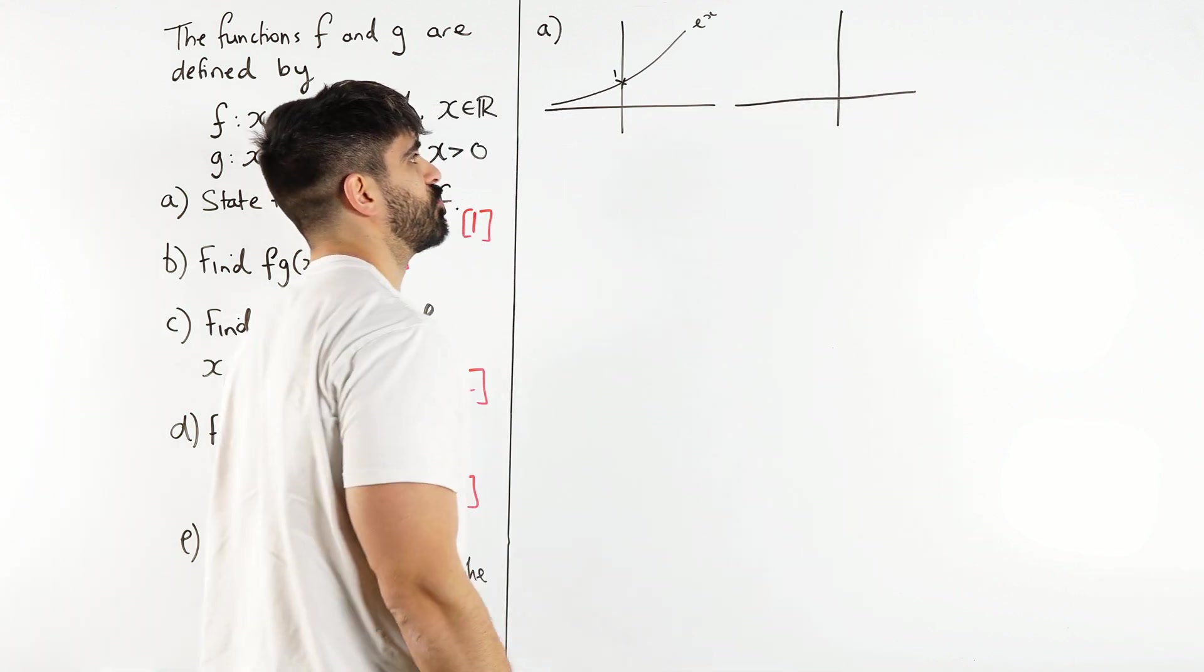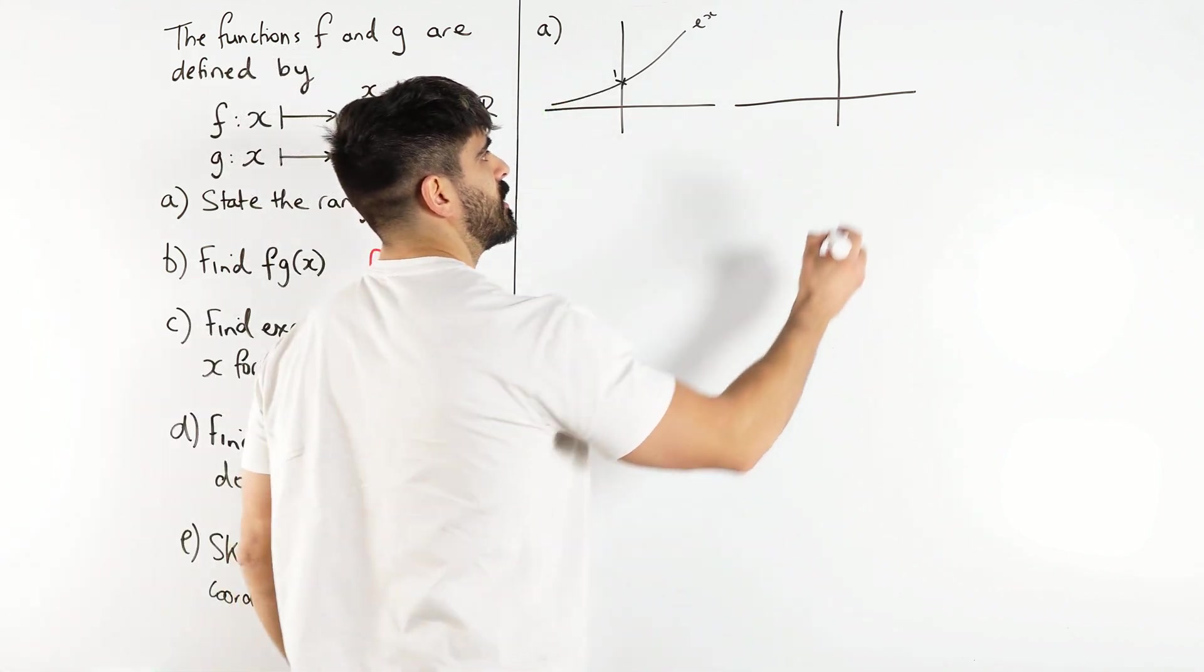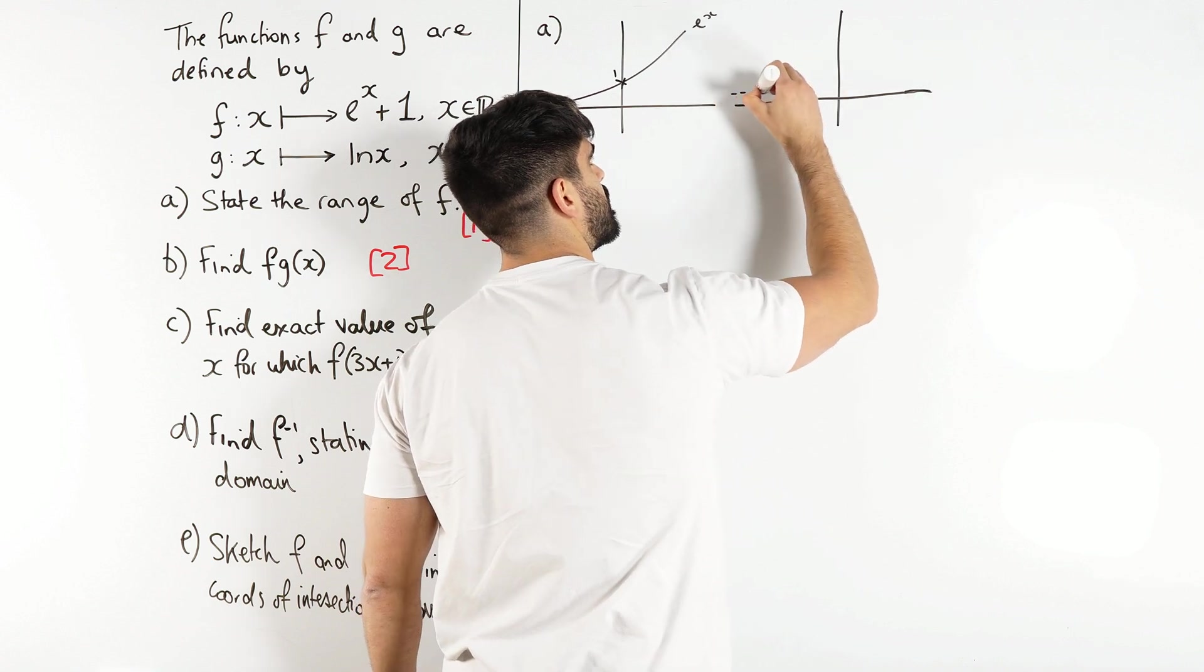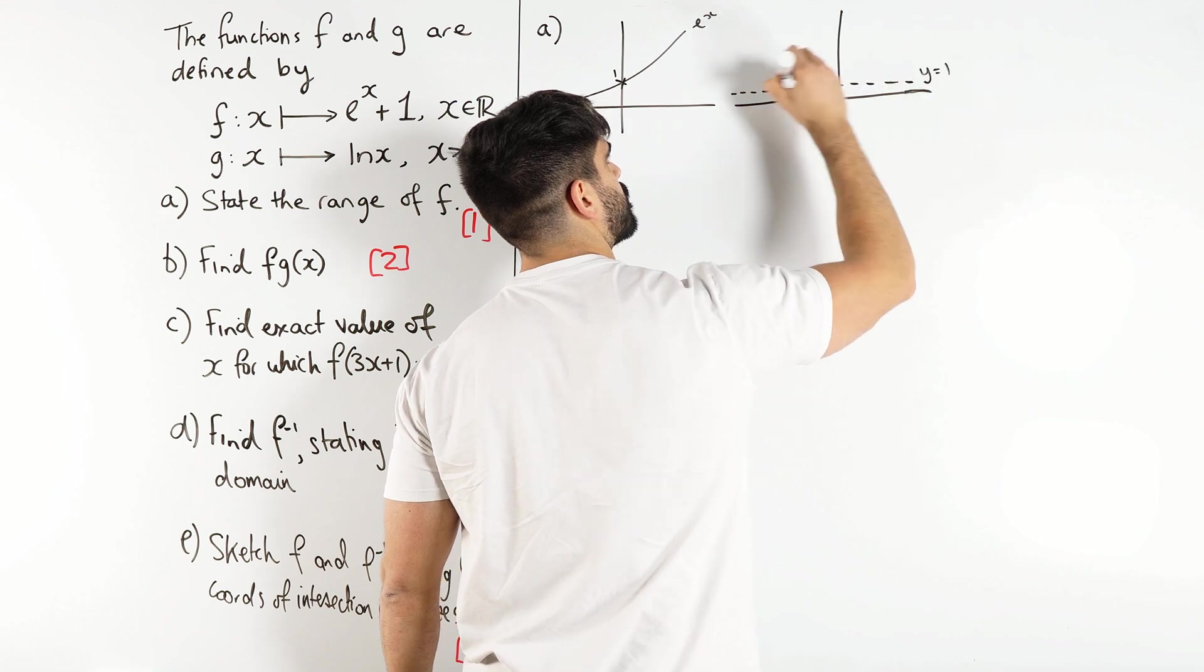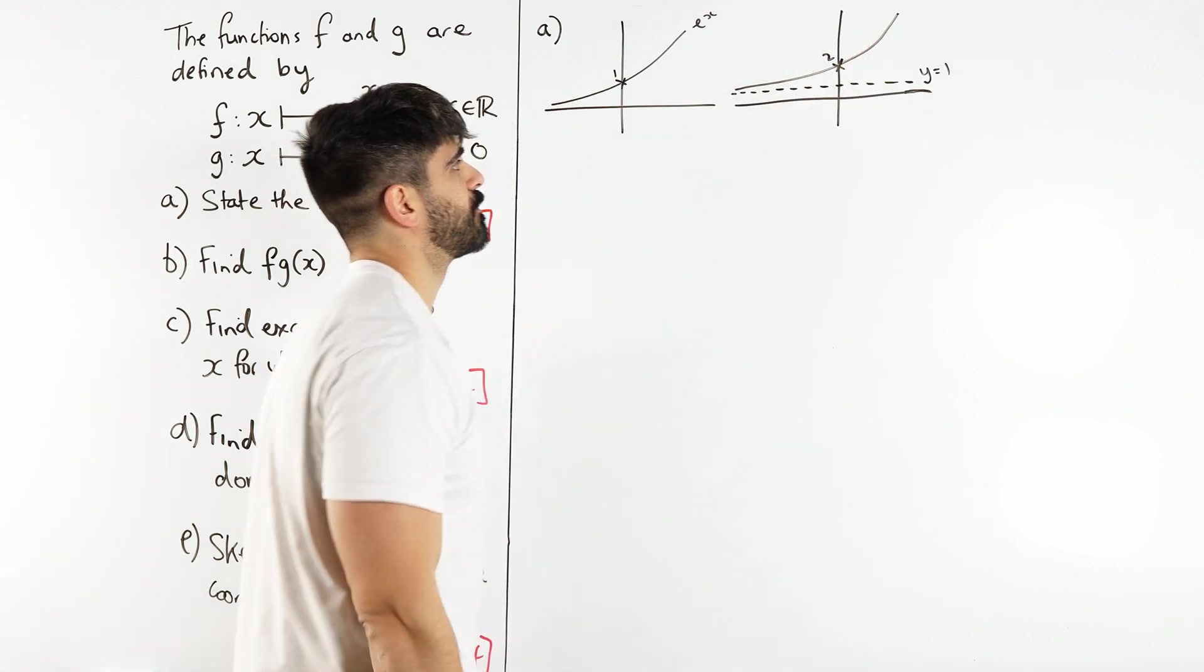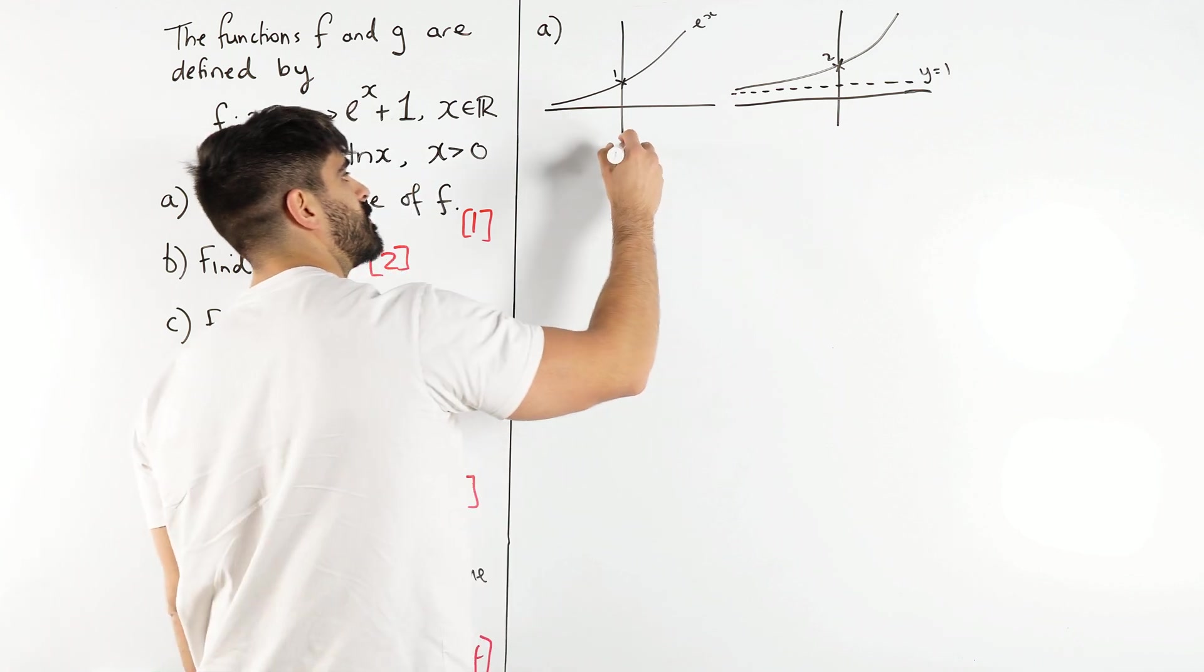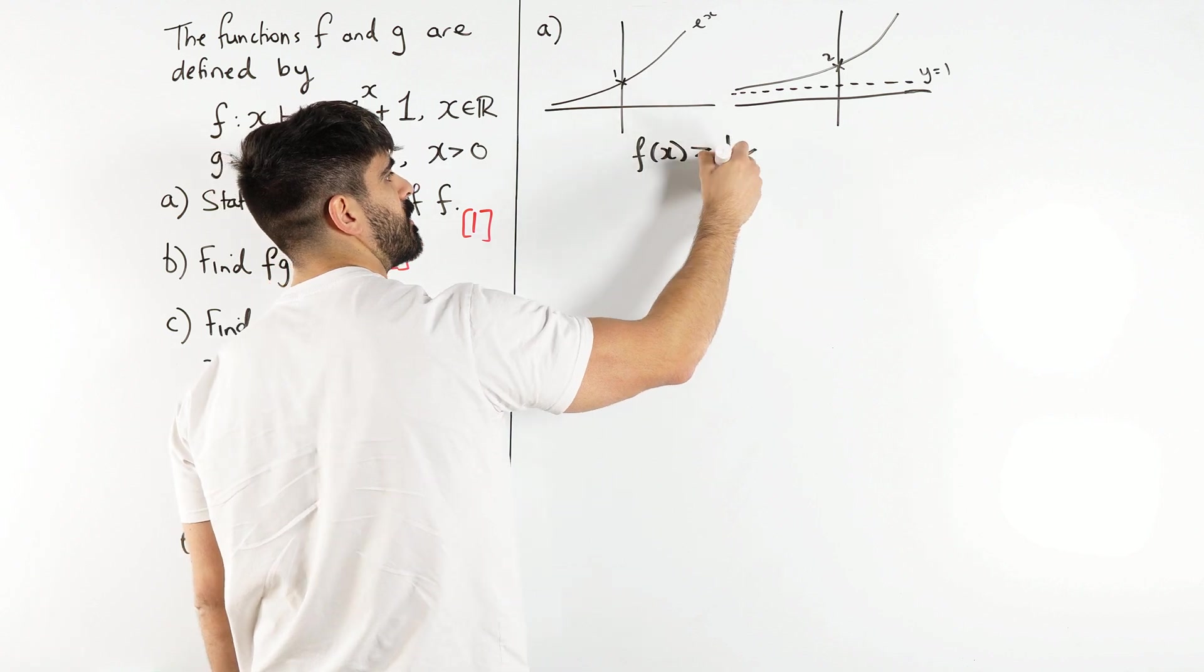Now the most important change is that the asymptote is at y = 0, so when we add 1, the asymptote is going to be at y = 1. It's going to cross at 2. So there you go, your range is all values above 1. So your range, you're going to say f(x) is strictly larger than 1.